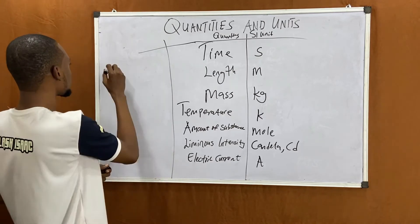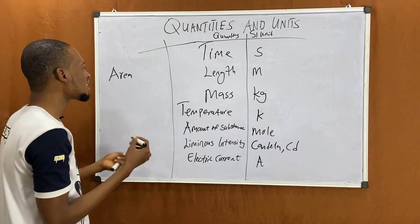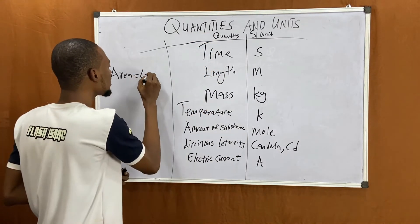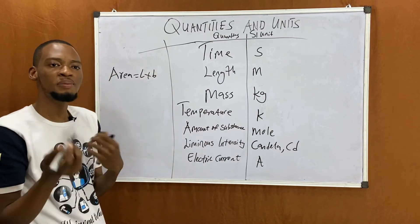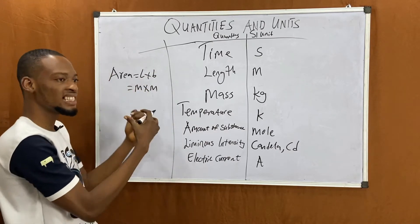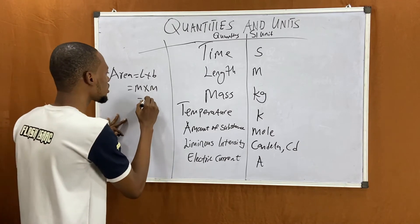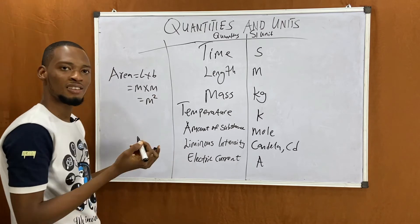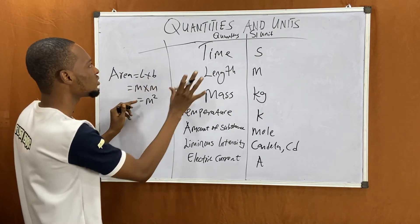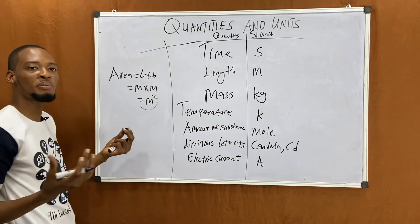Let's look at area. Area is a derived quantity. Area is length times breadth, which is m × m, because both length and breadth are distances. This equals meter squared (m²). So the derived quantity area is derived from fundamental quantities and its unit is gotten from fundamental units.